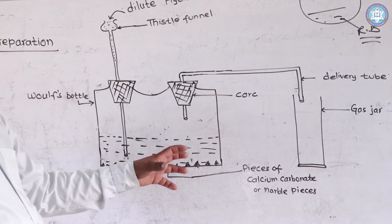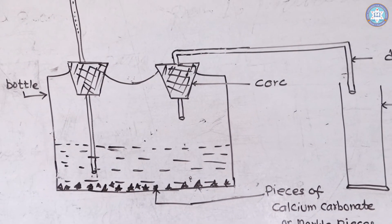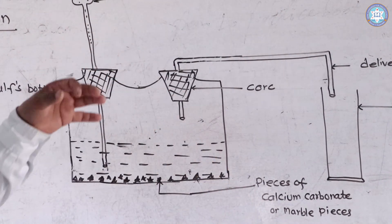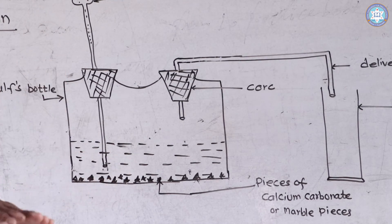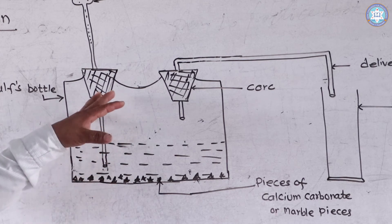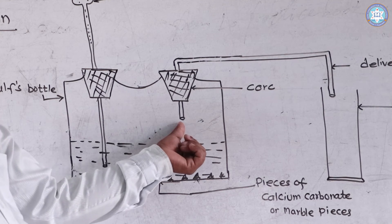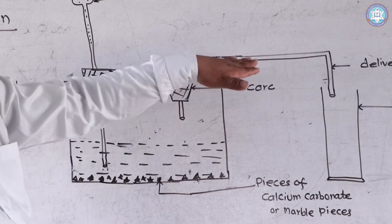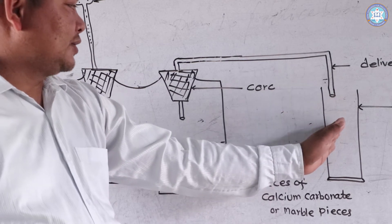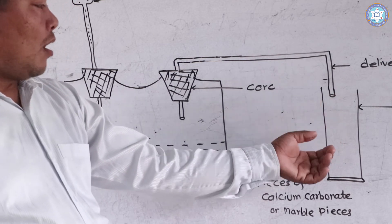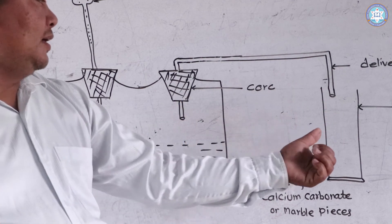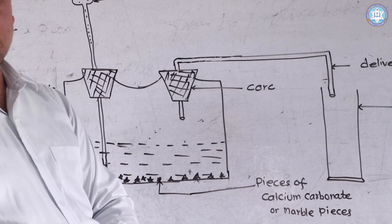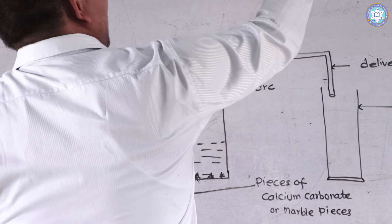At the bottom of the Woulfe bottle, we place some pieces of calcium carbonate or marble. Then we pour dilute hydrochloric acid through the thistle funnel. When they come into contact, the reaction starts and CO2 gas is produced, which travels through the delivery tube and is collected in the gas jar by upward displacement of air. CO2 is collected this way because it is heavier than air — about 1.5 times heavier — so it settles at the bottom of the gas jar and displaces the air upward.